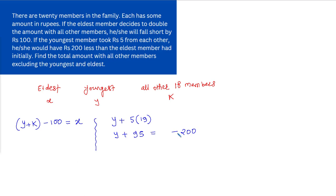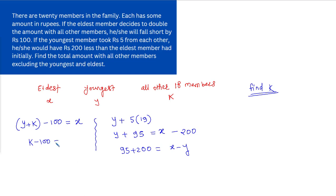We need to find K. From the youngest member's equation: Y plus 95 equals X minus 200, so X minus Y equals 295. From the eldest member's equation: X equals Y plus K minus 100, which means K minus 100 equals X minus Y equals 295. Therefore K equals 395. That is our answer.